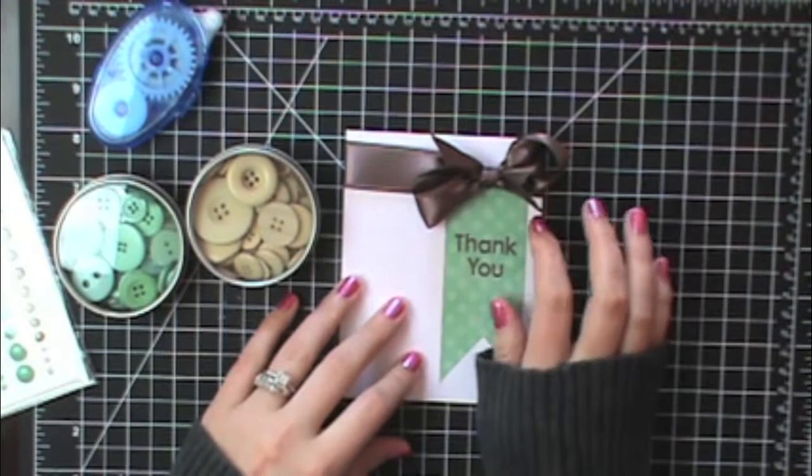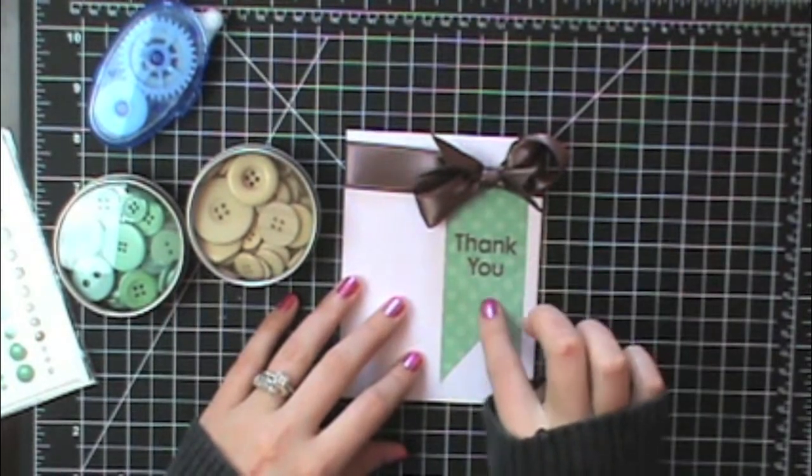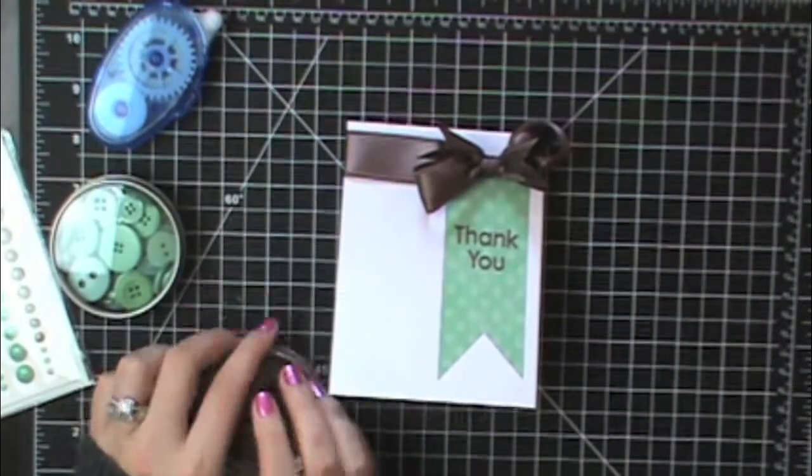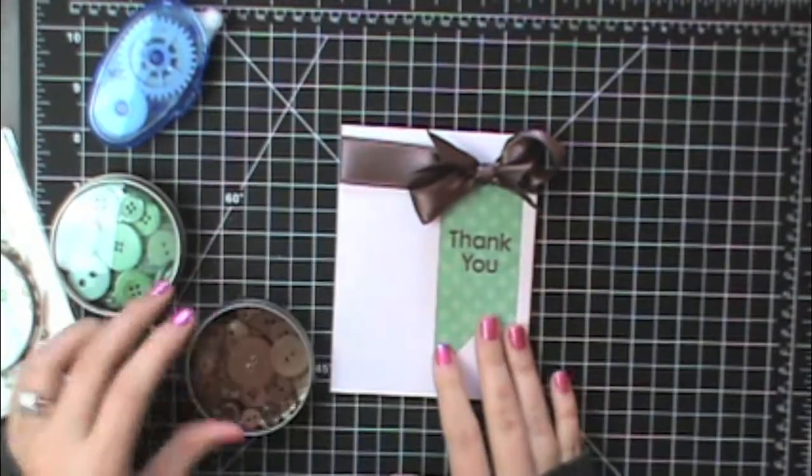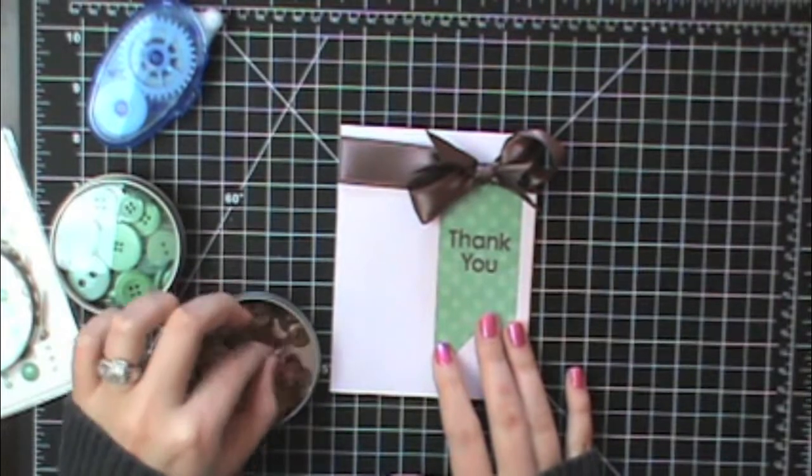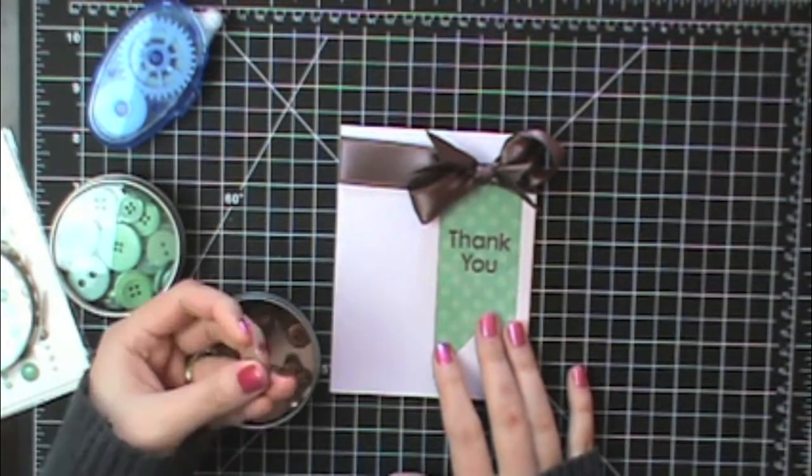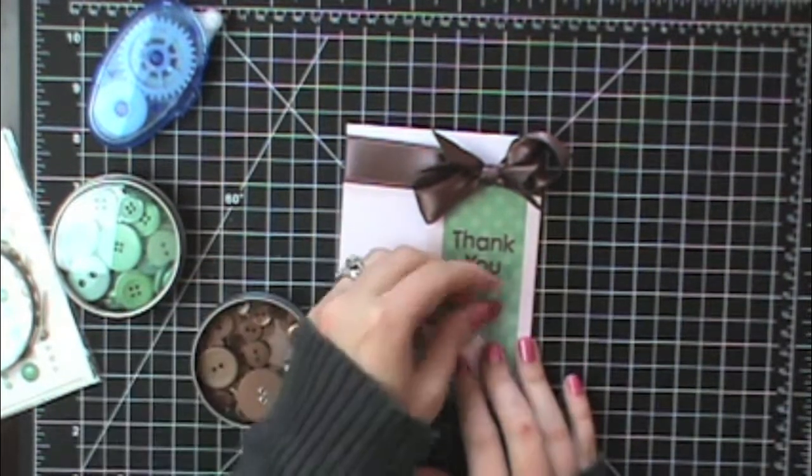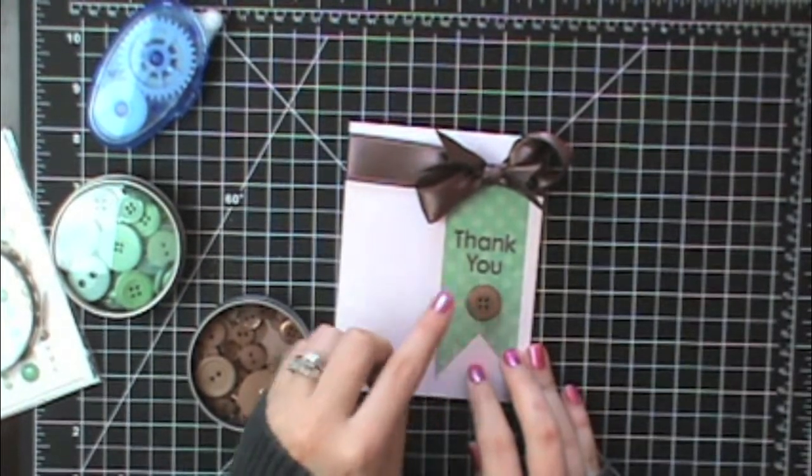I think I want to put a button right under this sentiment. I grabbed this tin. This is the Walk the Plank color. It actually matches the ribbon really well. I've got some buttons in here to use. I really like this one. I like this side actually better than the other side so that would be cute down there.